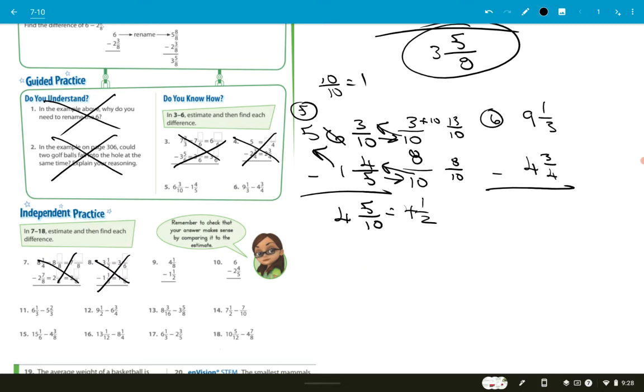Let's do number 6. I gave you the answer to number 5, which was 4 and 1 half. Let's look at number 6. We have 9 and 1 third, and we're subtracting 4 and 3 quarters. Ms. McGee, what's the common denominator? That's the first thing we almost always need to do. What's the common denominator for 4 and 3? It'd be 12. Ms. McGee, 4 goes into 12 how many times? 3 times. And 3 times 3 is 9. Ms. McGee, 3 goes into 12 how many times? 4 times. 4 times 1 is 4. Nicely done.